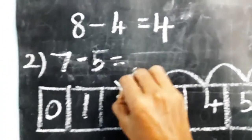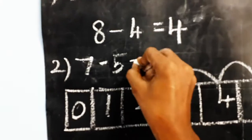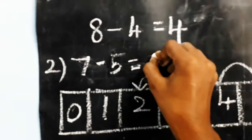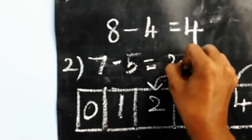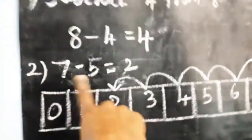We reached on which number? Yes, two. So therefore, seven minus five is equal to two.